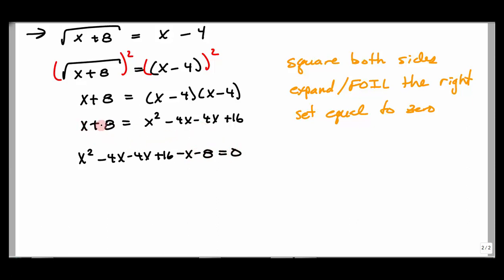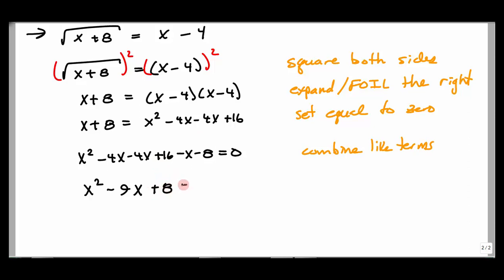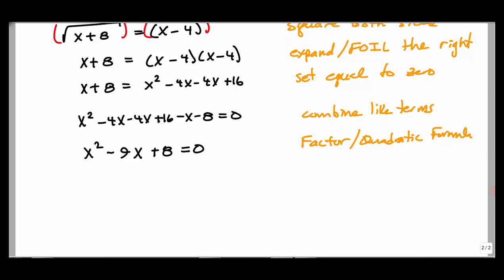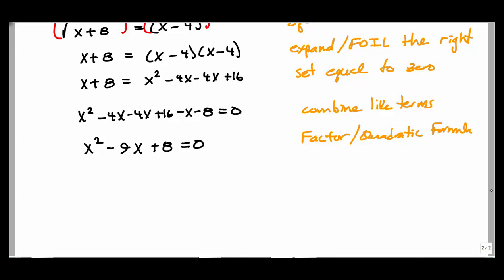Combining like terms — constants with constants, x's with x's, x²'s with x²'s: negative 4 minus 4 is −8, minus one more is −9x. And 16 minus 8 is +8. So I have x² − 9x + 8 = 0. This factors nicely into (x − 8)(x − 1). Using the zero factor property: x − 8 = 0 or x − 1 = 0, giving x = 8 or x = 1 as possible solutions.